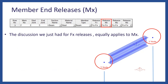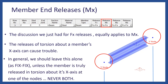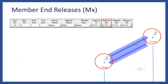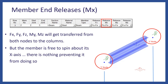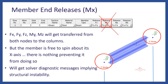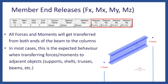In the case of MX, a similar discussion applies: the release of torsion about the member's X axis can also cause trouble. In general, MX should be left as fix-fix unless the member is truly released in torsion at one of the nodes — but never both. If MX is released at both ends, FX, FY, MY, and MZ forces will still transfer from both nodes to the columns, but the member is free to spin about its X axis with nothing preventing it, causing a solver diagnostic instability error. Finally, if everything is set as fix-fix, all forces and moments will be transferred from both ends of the beam to the columns — which in most cases is the expected behavior when transferring forces and moments to adjacent objects such as supports, shells, trusses, and beams.